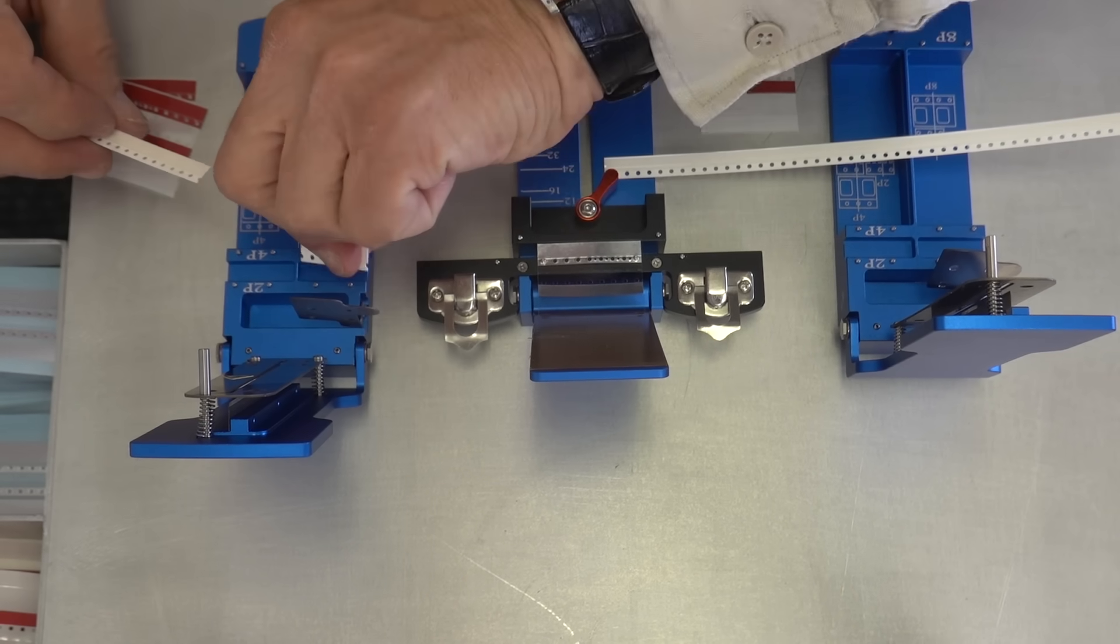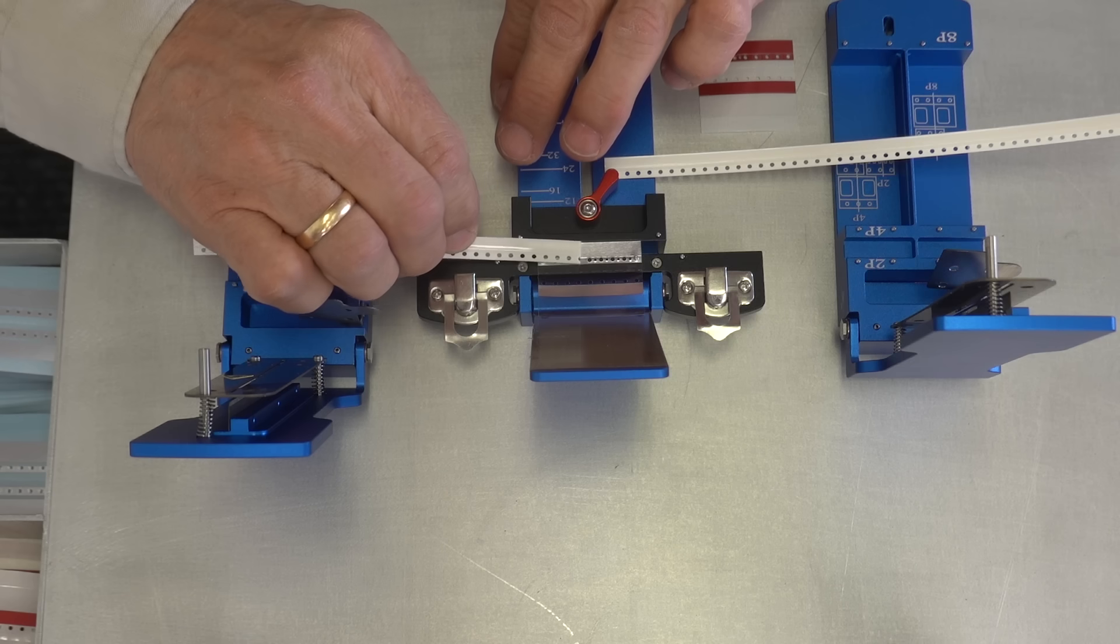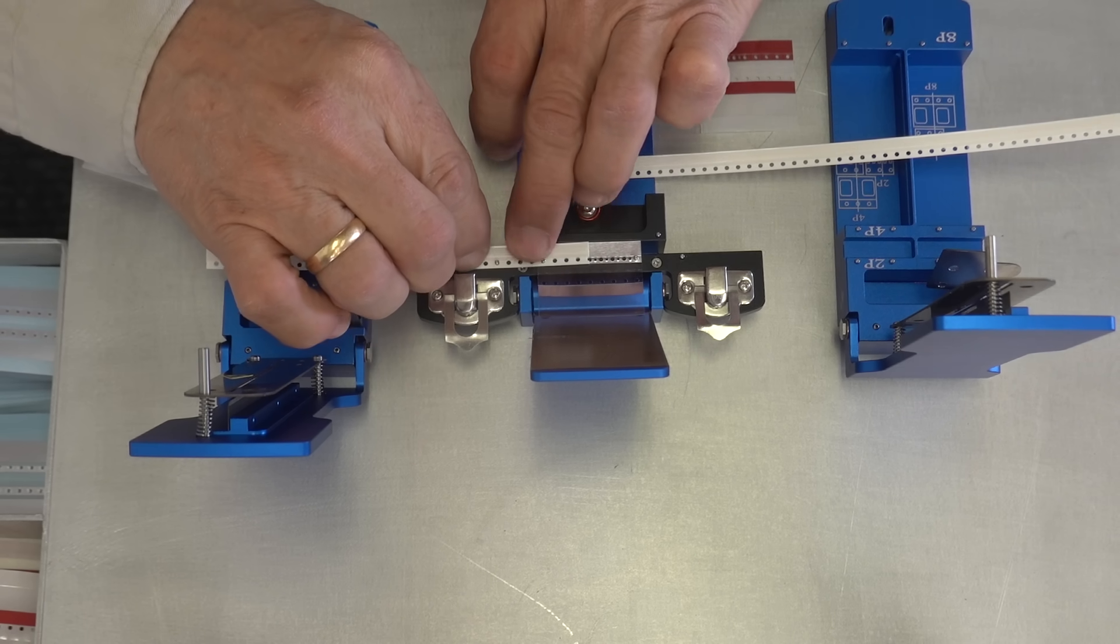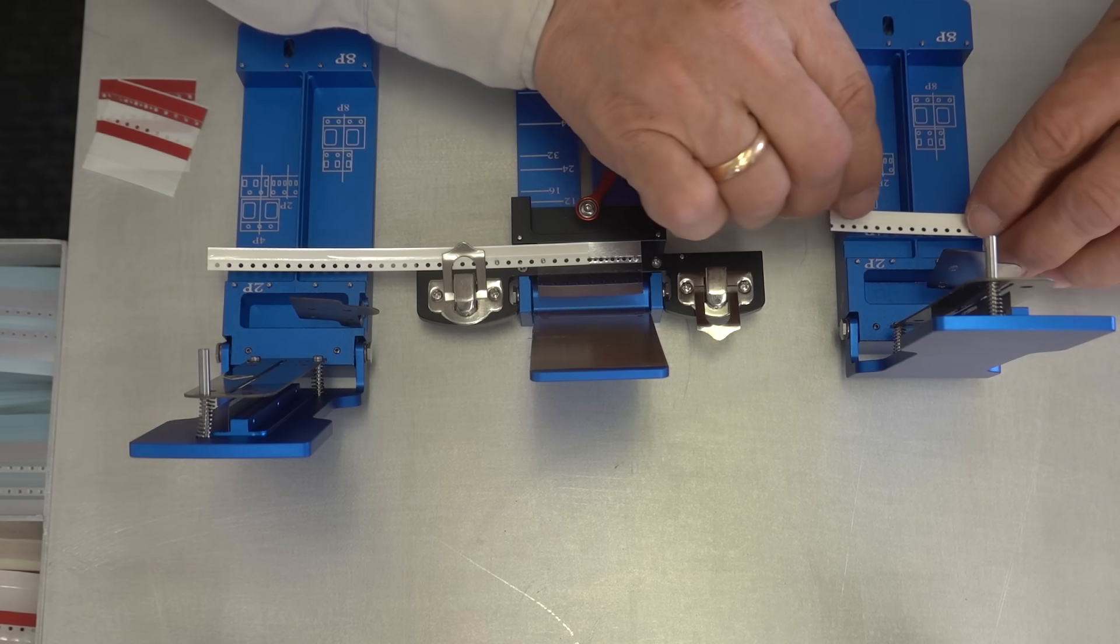We will cut two pieces of carrier tape to be used. Place the first line in the jig and there's the alignment pins that hold it down right there.